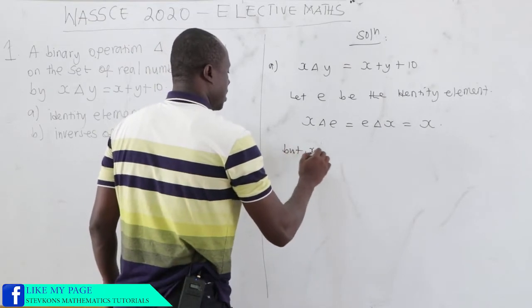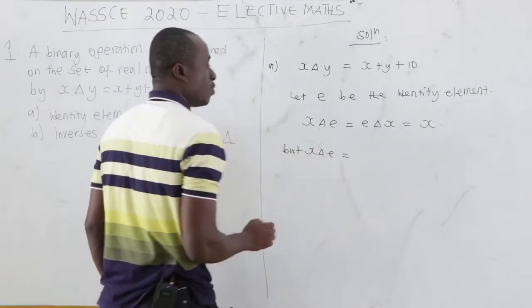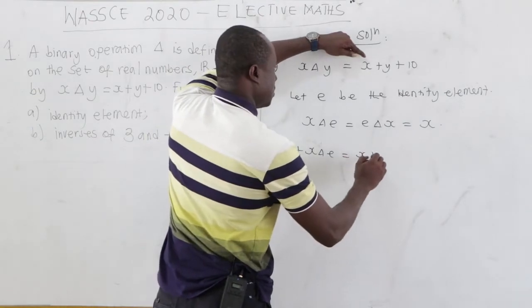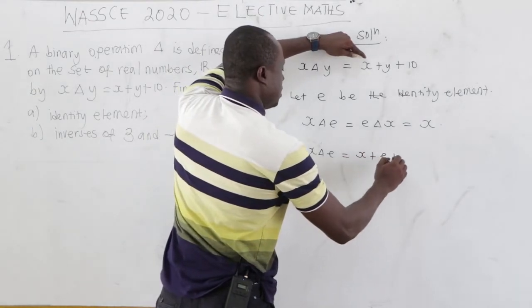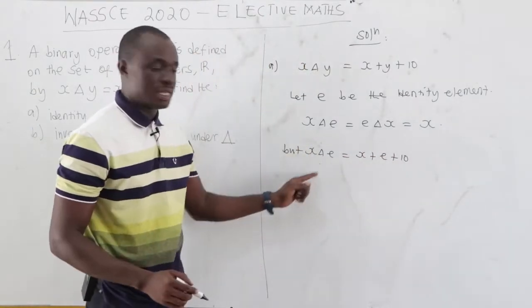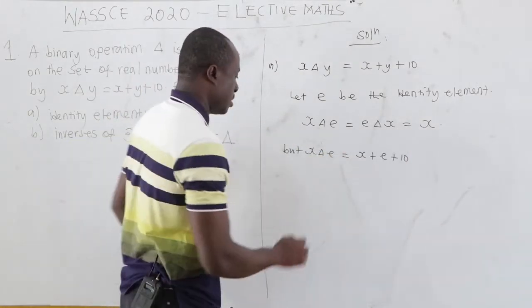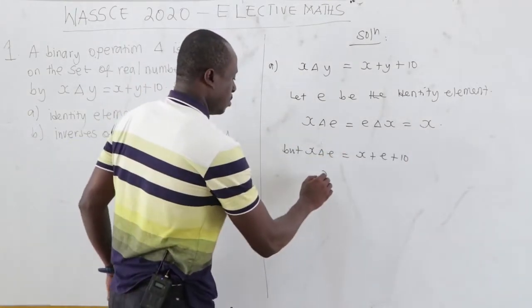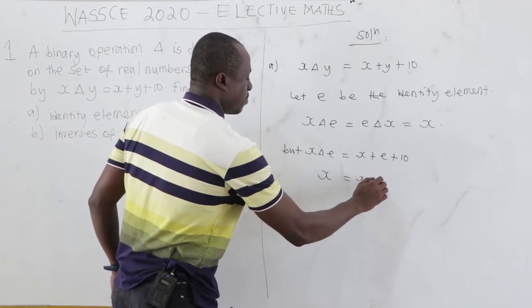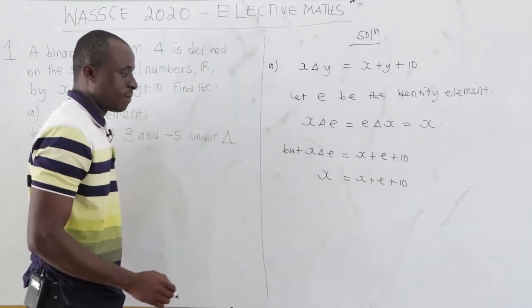Now, x delta e is equal to, from the definition, x plus e plus 10. And x delta e should equal x. So beneath this, we have x equal to x plus e plus 10.